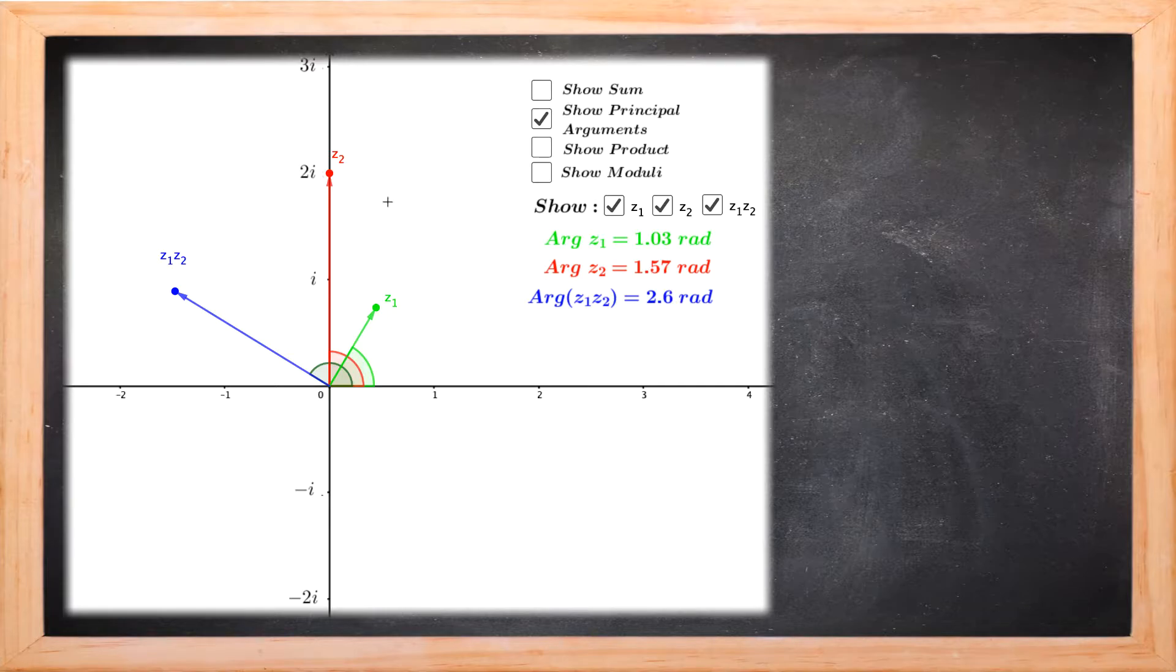So when you describe the effect of multiplying by 2i on Z1 you would say that there's a scaling factor 2 and a rotation, a positive rotation in an anti-clockwise direction of pi upon 2 which is the argument of Z2.